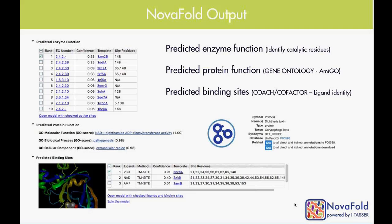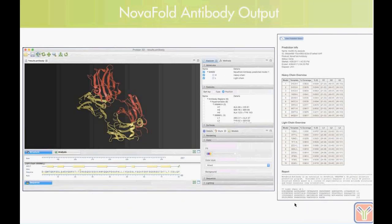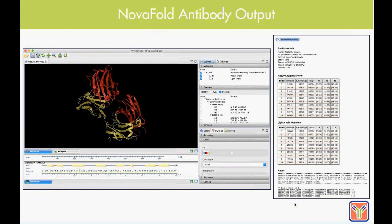As far as NOVAFOLD Antibody goes, we generate models of the antibodies and automatically annotate the CDR regions of both the heavy and light chains, giving people easy access to the key complementarity-determining regions of antibody specificity, along with details about the templates used through this homology modeling application.